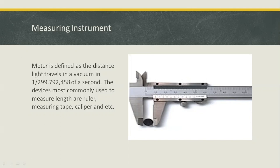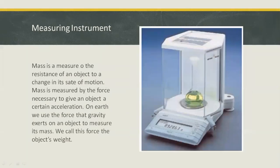Mass is a measure of the resistance of an object to a change in its state of motion. Mass is measured by the force necessary to give an object a certain acceleration. On Earth, we use the force that gravity exerts on an object to measure its mass. We call this force the object's weight.